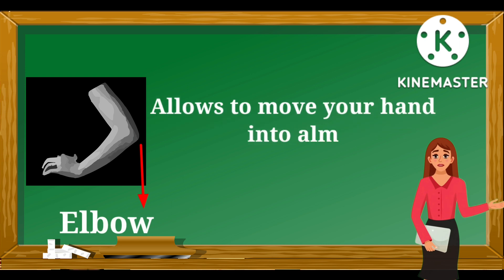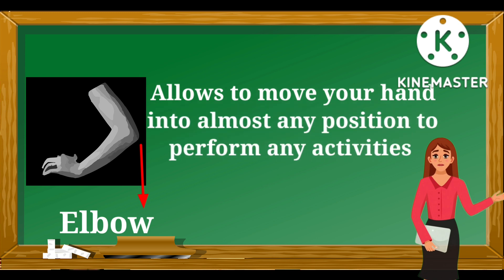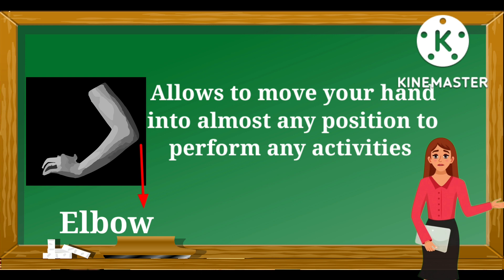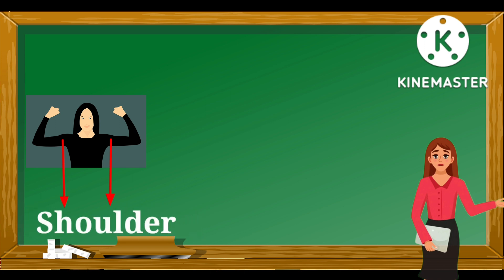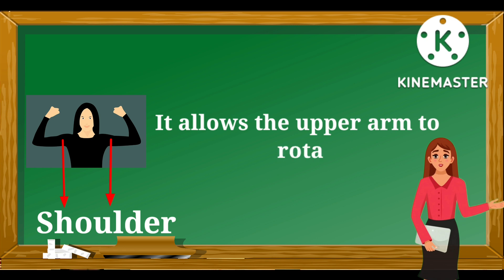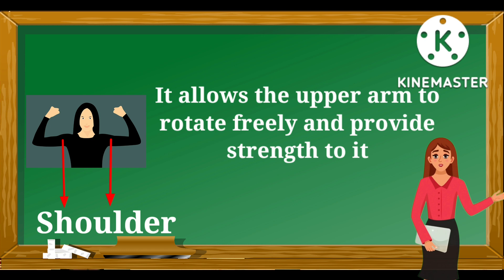This is an elbow — E-L-B-O-W. It is a joint located between the upper arm and the lower arm, and allows you to move your hand into almost any position to perform activities. This is a shoulder — S-H-O-U-L-D-E-R. It is located above the upper arm and is one of the largest joints in the body. It allows the upper arm to rotate freely and provides strength to it.